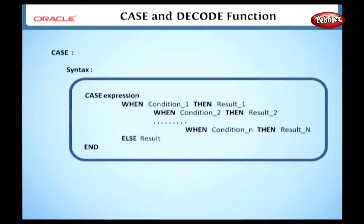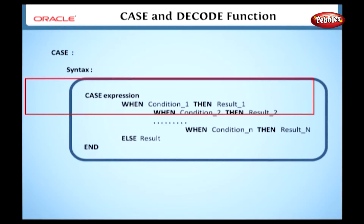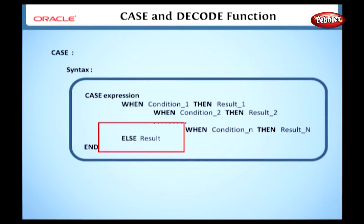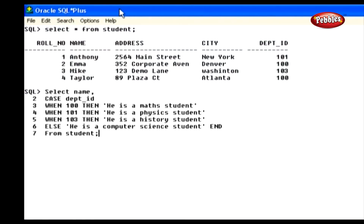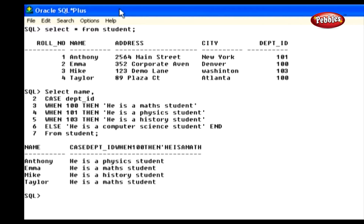Now we will see the syntax of the Case function. In this syntax, the Case statement will check the expression against condition 1. If it is equal, then it will return result 1, and this process goes up to condition N. If it does not find any matches, it will return the else result. If the else is omitted, it returns null. The Case function compares the department name with every option, and if it finds a match, it sends the corresponding value; otherwise, it returns the else value.